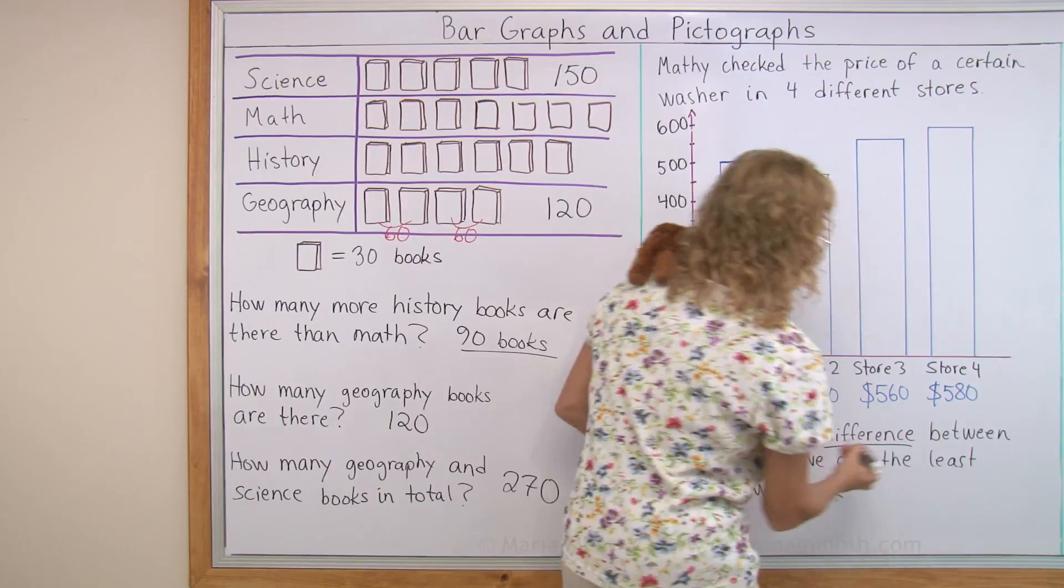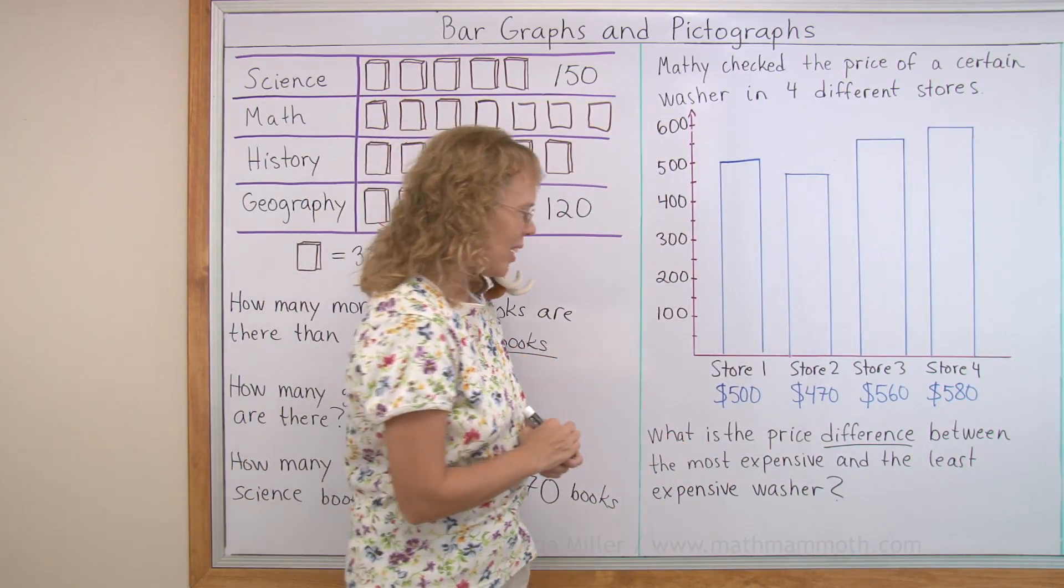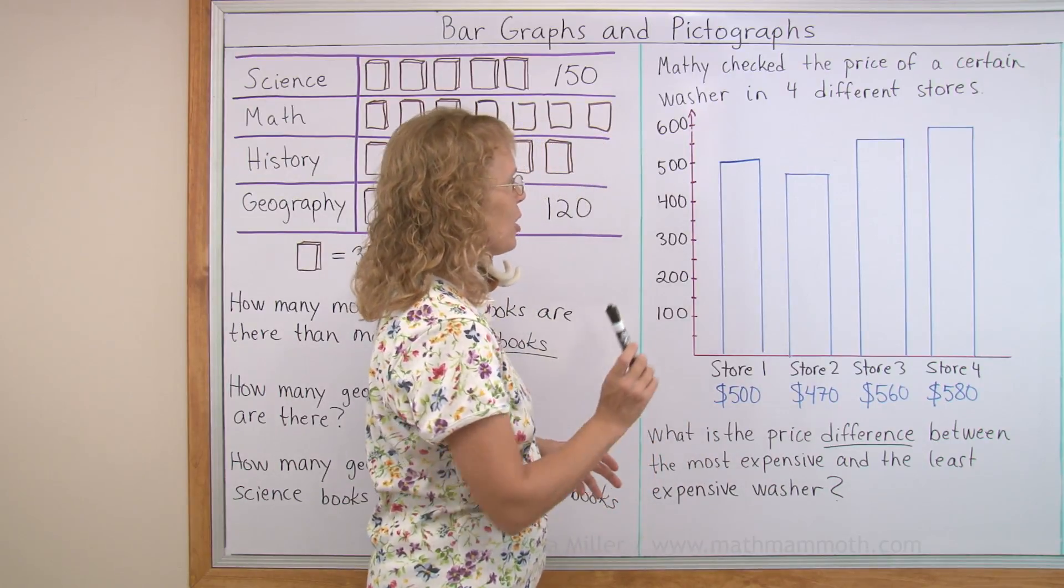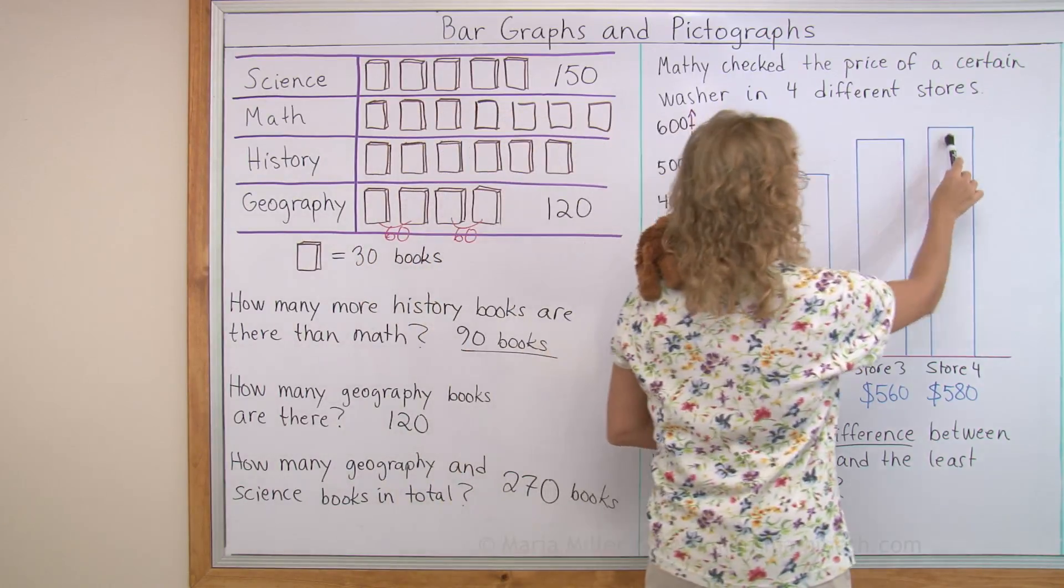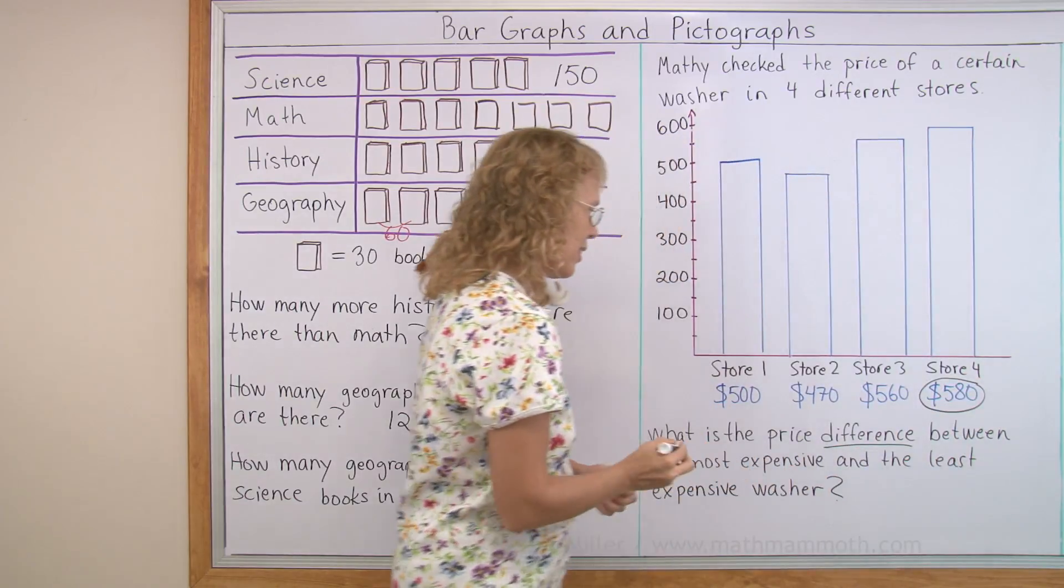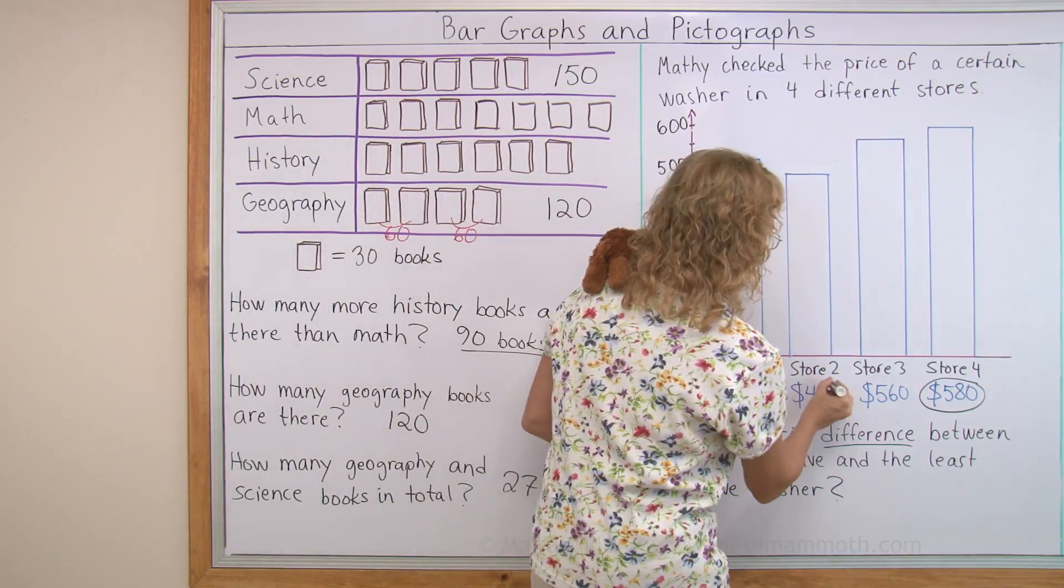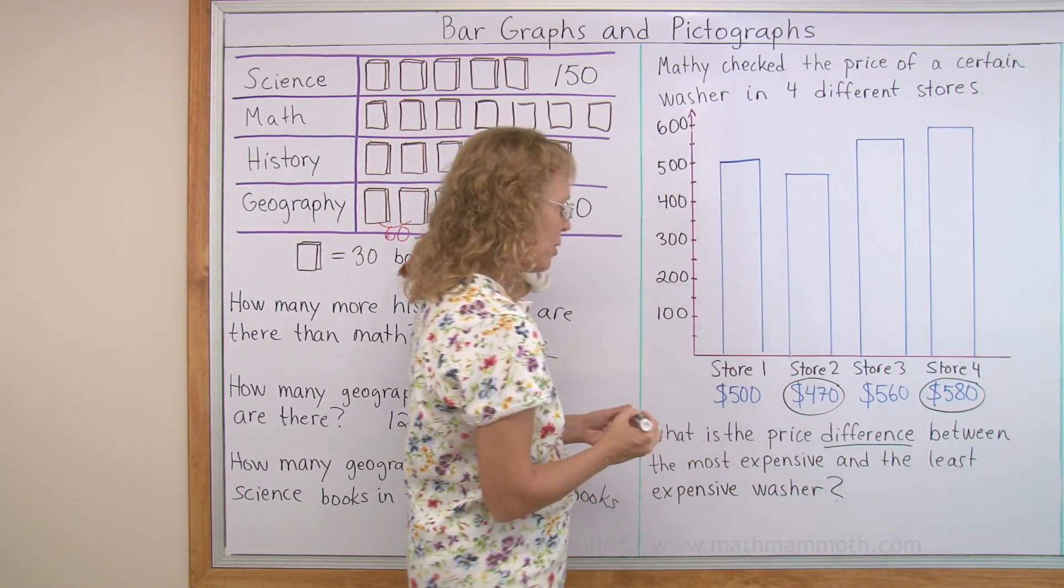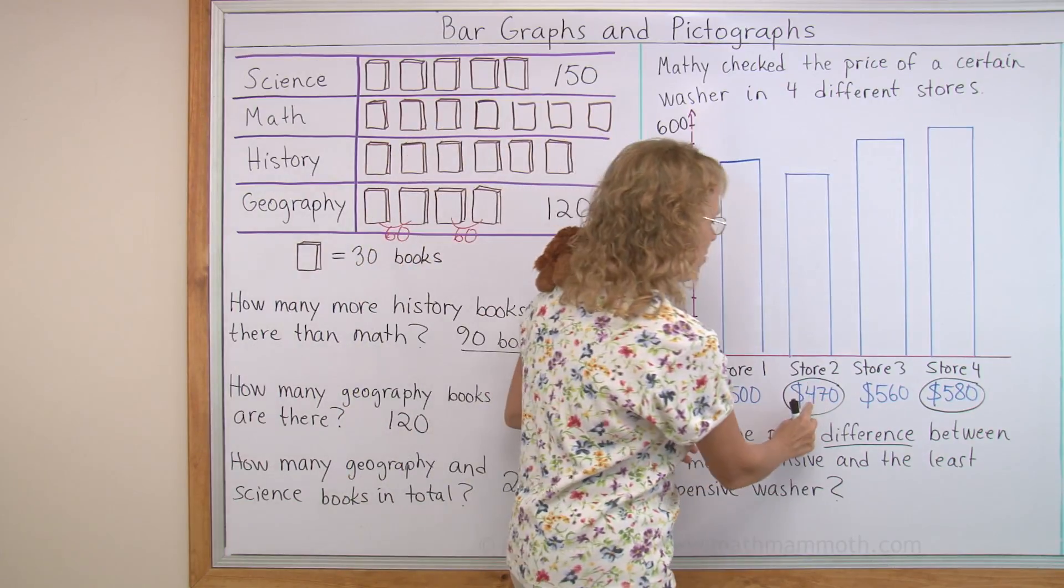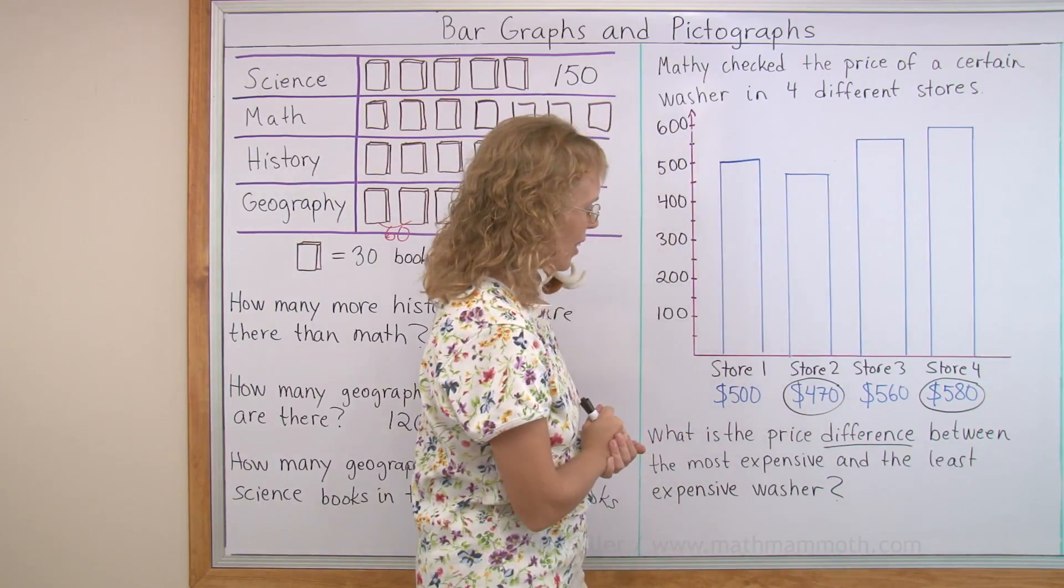Difference or how far apart are these two numbers? The most expensive. Which one is the most expensive? This one here, right? It costs 580. And the least expensive is the cheapest one. So that's this one. And what is the price difference? What is the difference of 470 and 580?